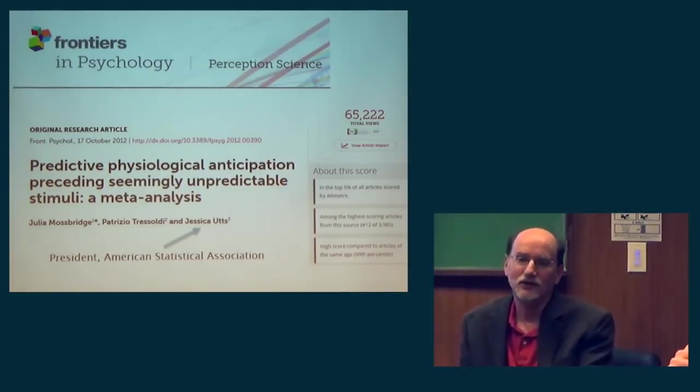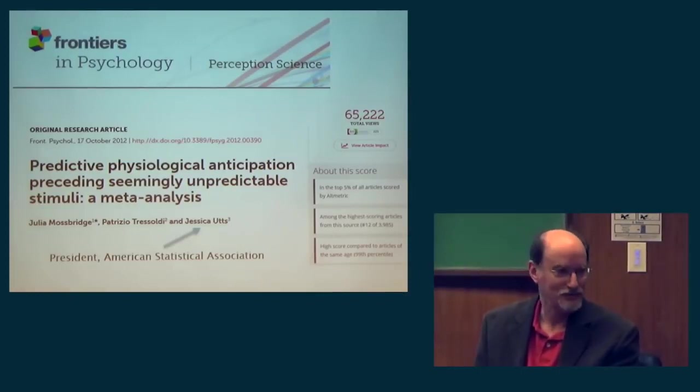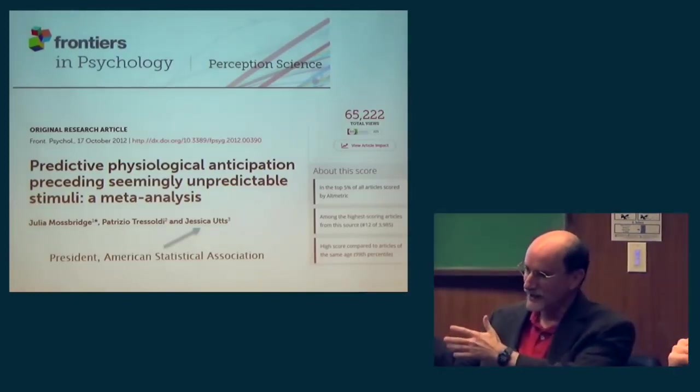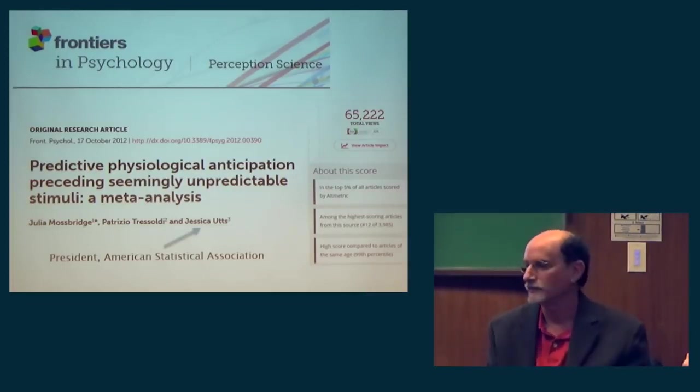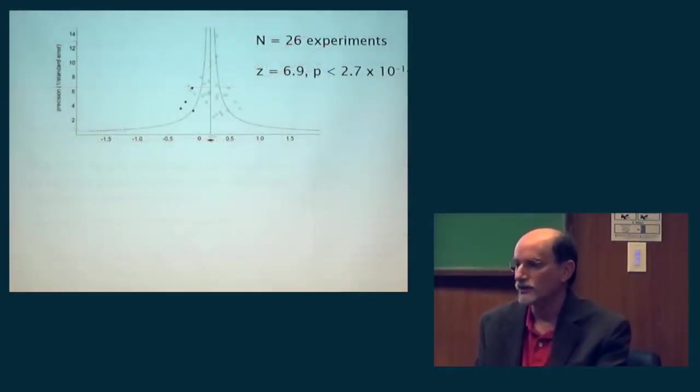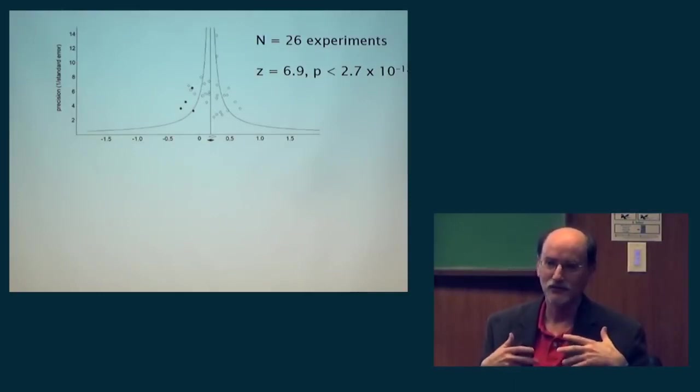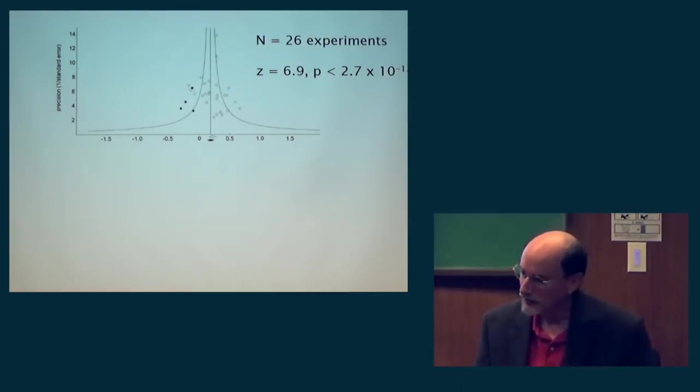Sometimes a skeptic will say you didn't do the meta-analysis correctly. That's an easy way to get out of believing anything. In this case, our statistician is the current president of the American Statistical Association. So we can deflect the skeptics to the ASA and say if they don't know what they're doing, we give up. Jessica is also the chair of the statistics department at UC Irvine and has been involved in this field for a very long time. They found 26 experiments. Overall, the probability is 10 to the minus 12, or odds of about a billion to one.